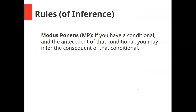So what are these rules of inference? In this video, we're going to have four rules of inference in our proof system. Number one is called modus ponens. Modus ponens says if you have a conditional and the antecedent of that conditional, you may infer the consequent of that conditional.